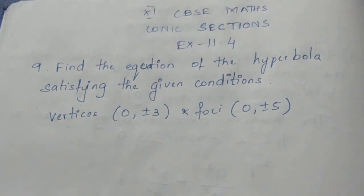Let's see the question. Find the equation of the hyperbola satisfying the given condition: vertices (0, ±3), foci (0, ±5).